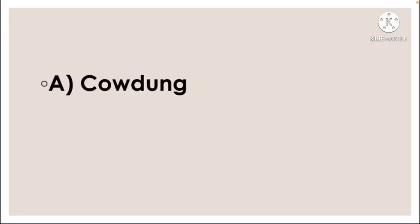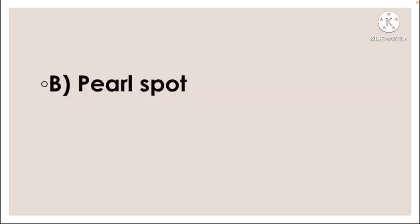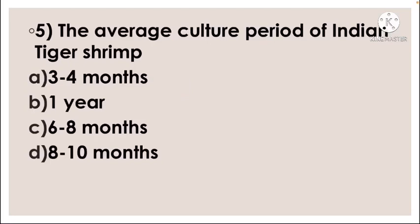Next question: Select a fish that can grow better in cages — option A catla, option B pearl spot, option C mrigal, option D anabas. The correct answer is option B, pearl spot. Next question: The average culture period of Indian tiger shrimp —